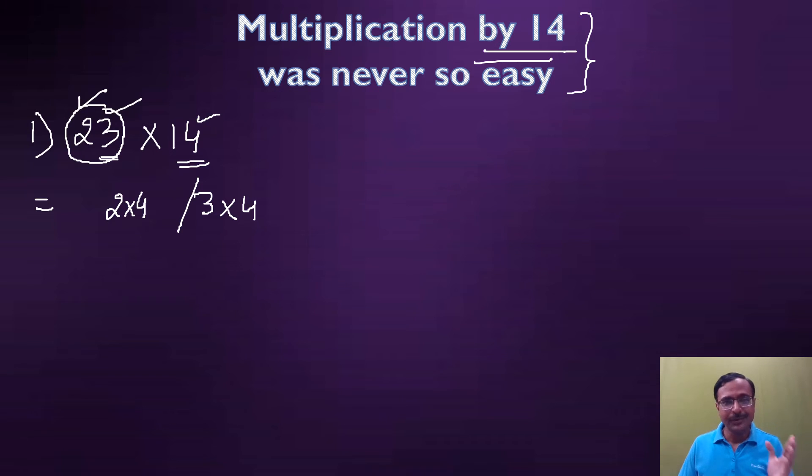We have a digit on the right side of 2, that is 3, so I have to add that 3 to the result. Finally, when I am done with all the digits, the first digit 2 comes as it is. So the three numbers which I obtained are: 2, this is 8 plus 3 equals 11, and 3 times 4 is 12.